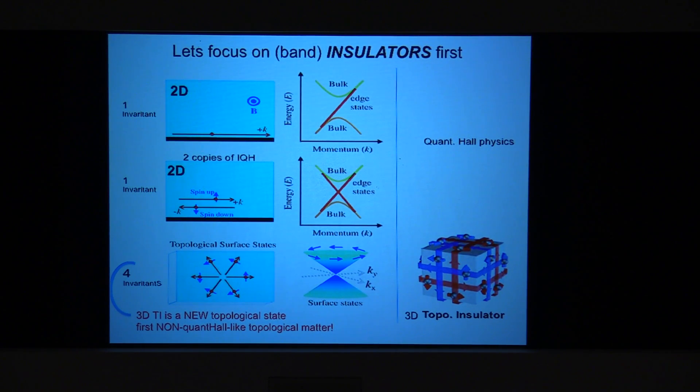If you consider two copies of the integer quantum Hall states, that allows you to make a time reversal invariant state. You take two counter-propagating states, spin up and down, and then they are held together by Rashba, and that's the Kane-Mele paper in 2005, and that gave birth to this time reversal invariant topological insulator, but it's also described by one invariant. So in this case, it's the Z2 invariant. You can think of Z2 invariant instead of a number, it's the parity. It's a product of the parity of the wave functions.